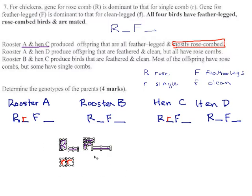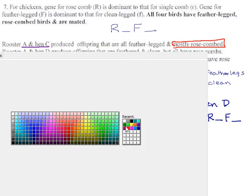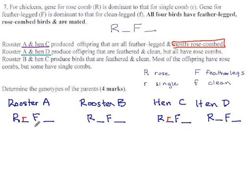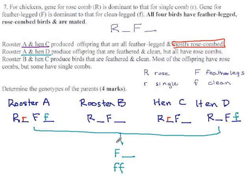Okay, let's see what we can do with the next pairing. They say rooster A and hen D produce offspring that are feathered and clean, so we get some feathered big F blank, and we get some who are clean legged little f little f. Well, this is good stuff. If some of them are little f little f, that means both parents must have had a little f to give, so that tells us everything we need about rooster A, and it tells us something about hen D. She has the recessive allele too.